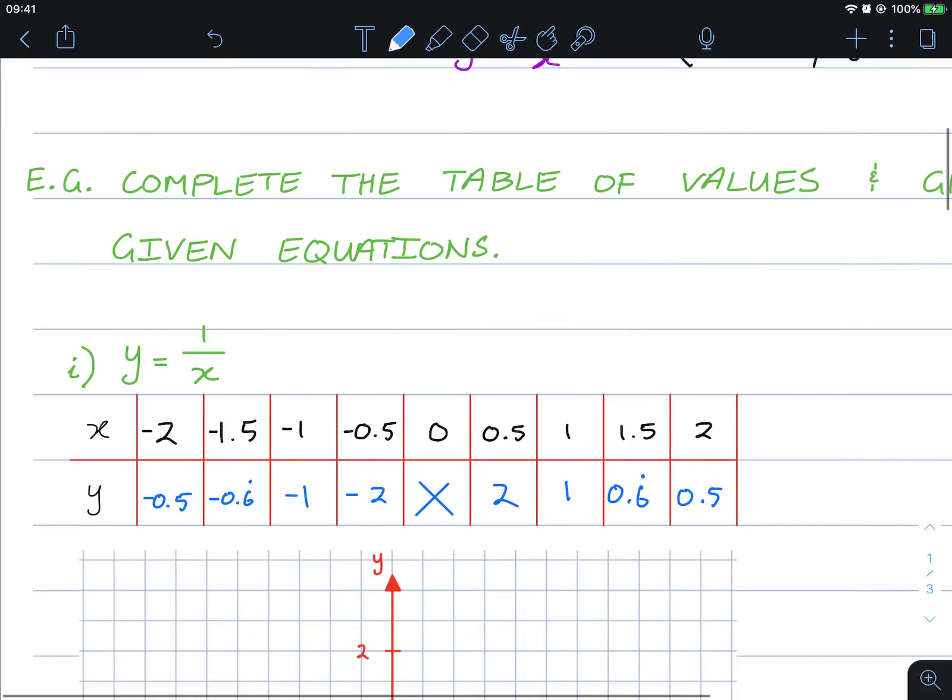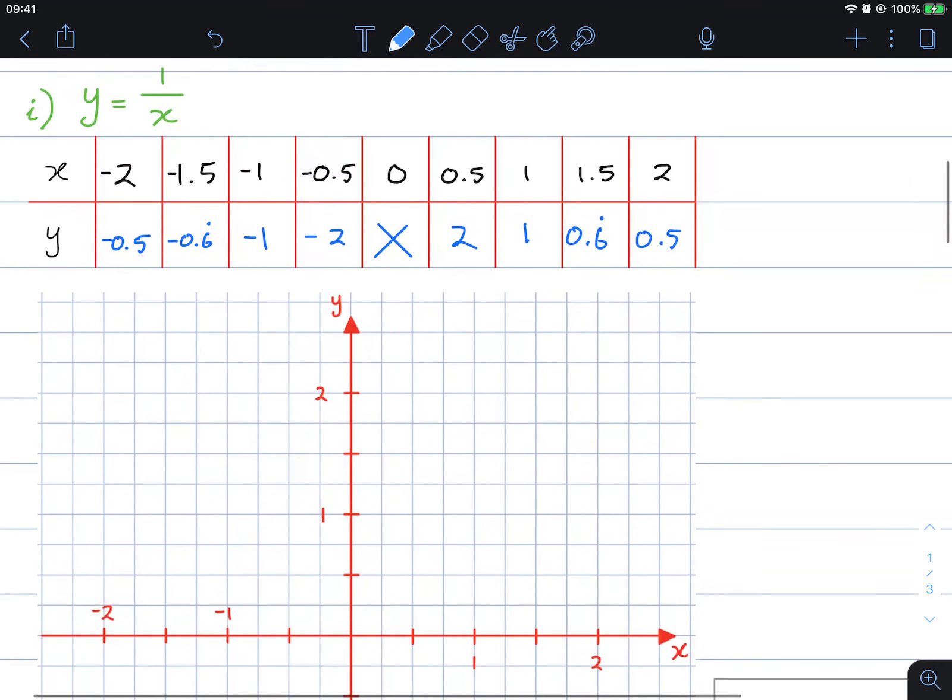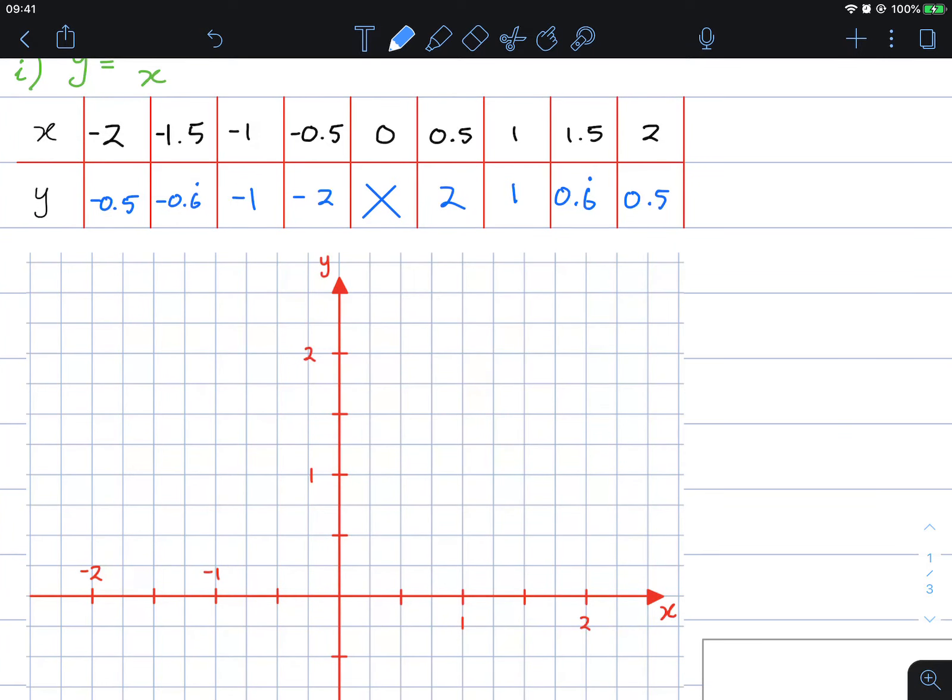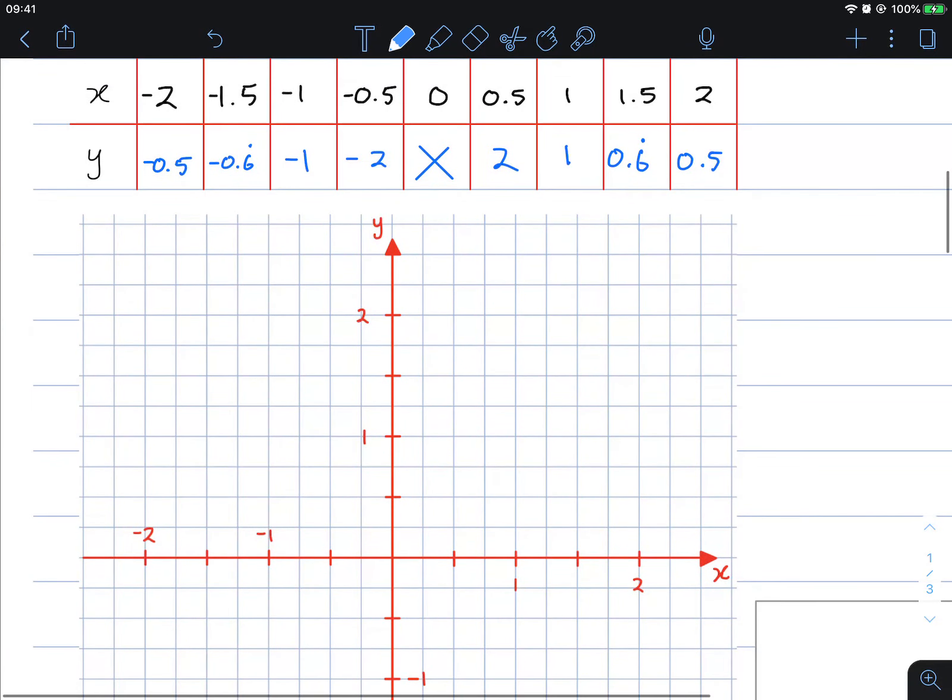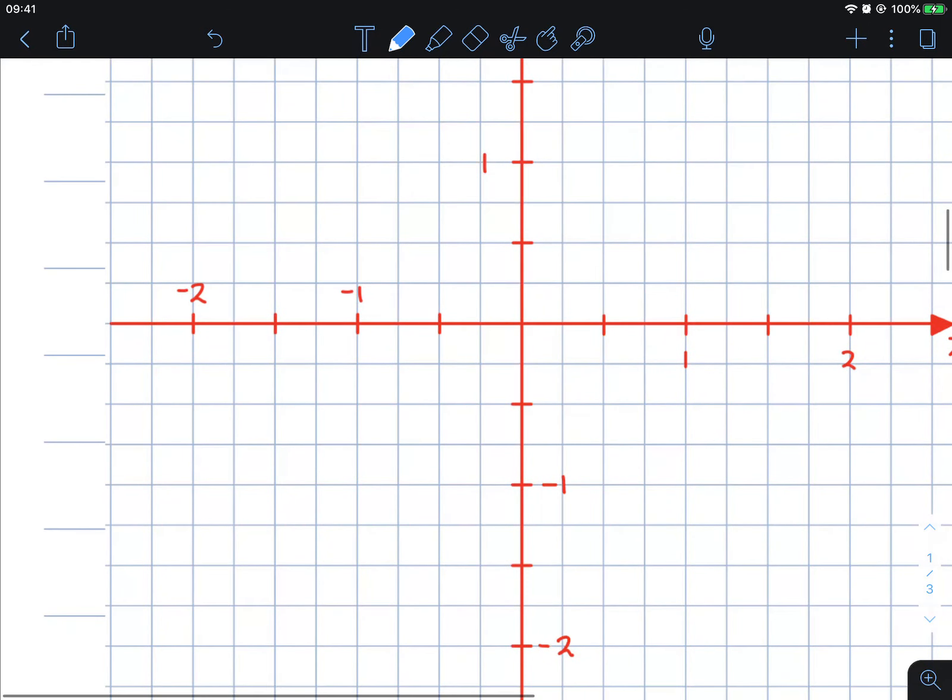Graphing these, we should get two branches like so. Negative 2, negative half, so negative 2 is here, half is going to be here.